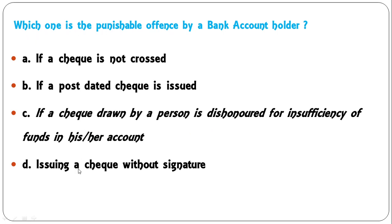Which one is the punishable offense by a bank account holder? Options: if a cheque is not crossed; if a post-dated cheque is issued; if a cheque drawn by a person is dishonored for insufficiency of funds in his or her account; or issuing a cheque without signature? C — a dishonored cheque due to insufficient funds — is the offense that attracts penalty. C is the correct answer.